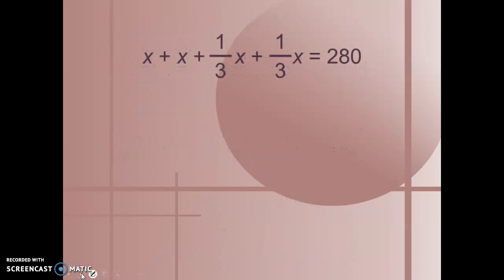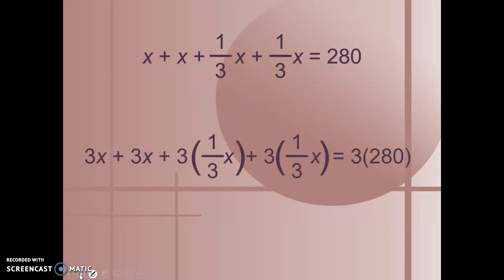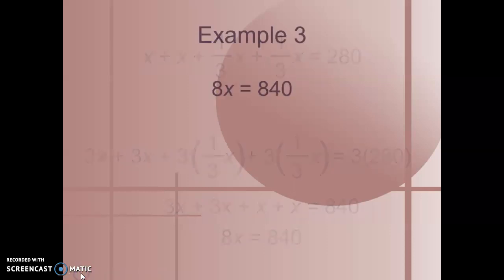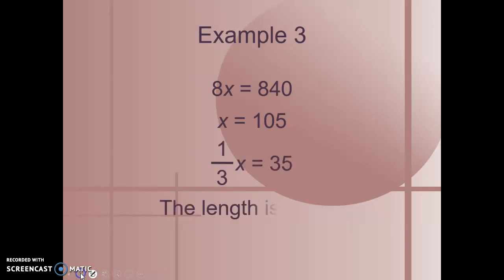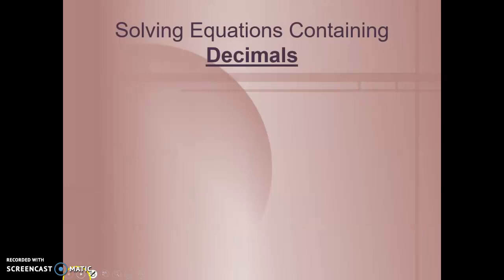We're going to follow the steps that we had before. Let's find the least common multiple or least common denominator. The LCD is 3. So we're going to multiply everything on both sides by 3. That gives us 3x plus 3x plus x plus x equals 840. Combining our like terms and solving for x, we find out that x equals 105. Now x was just the length of the field. The width was one-third x, which is 35. So the length of our field is 105 feet, the width is 35.